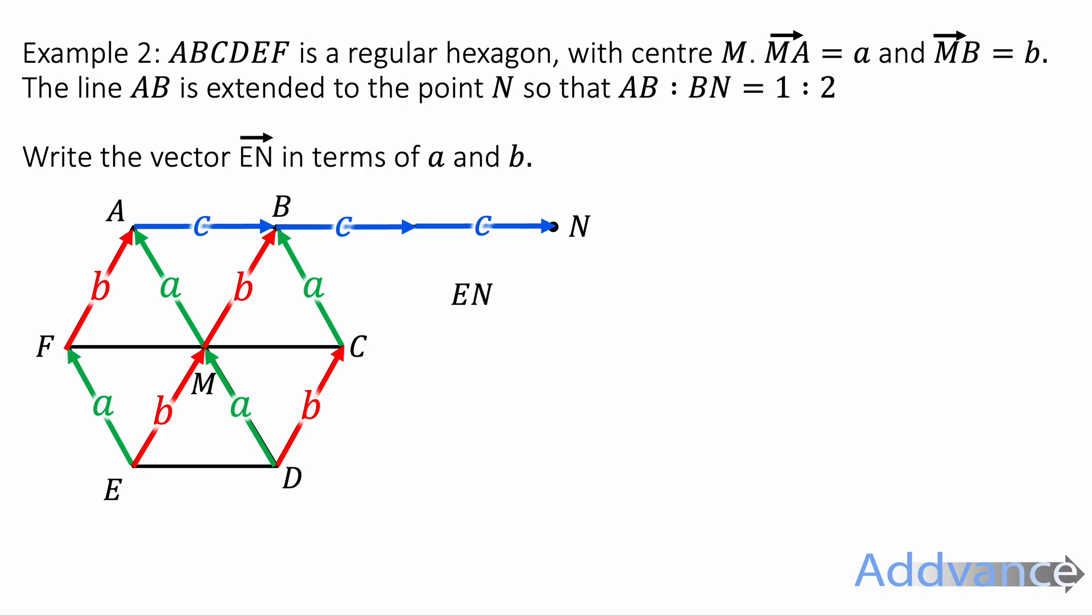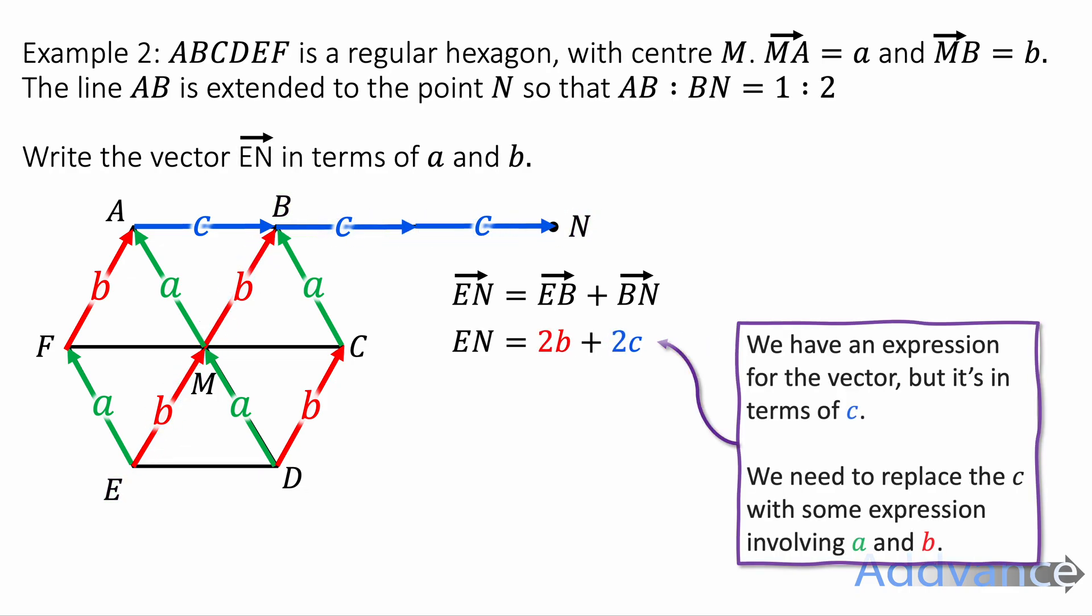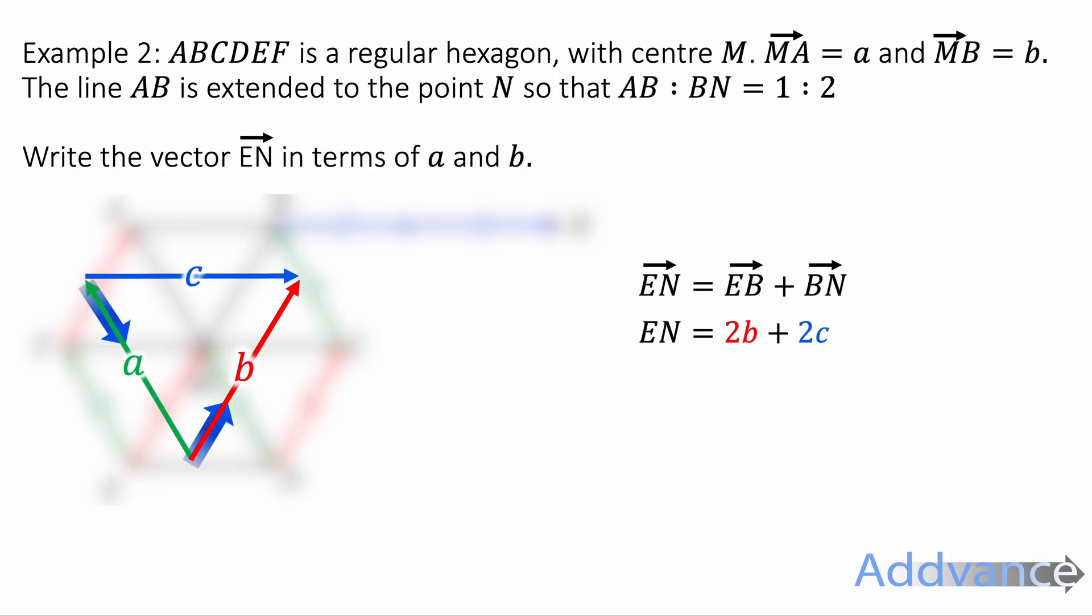Now we want to go from E to N and the easiest way to do that is to go from E to B and then B to N. From E to B is just b and b together. So it's going to be b plus b. And then from B to N, that is c plus c, which is 2c. We can simplify that to be 2b plus 2c. However, this is in terms of c and c was a vector we made up. We need to replace the c with some expression for AB.